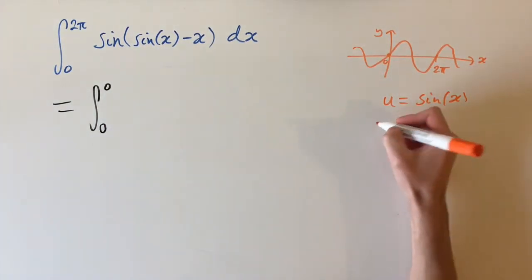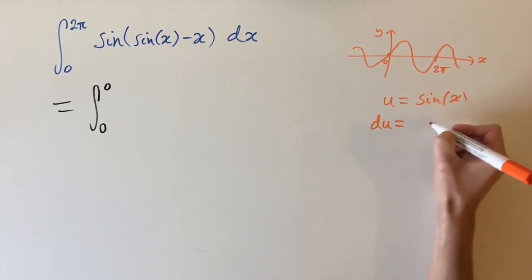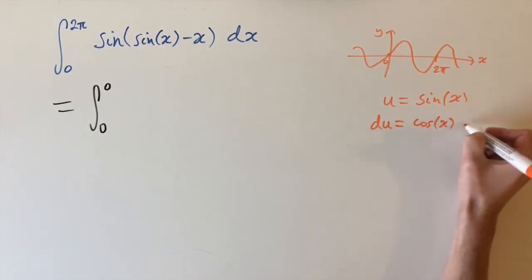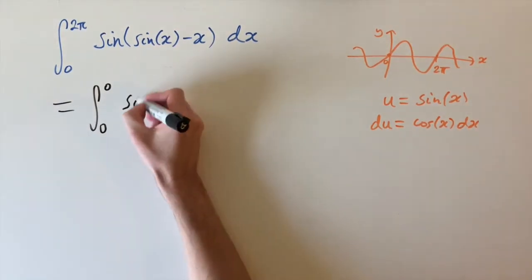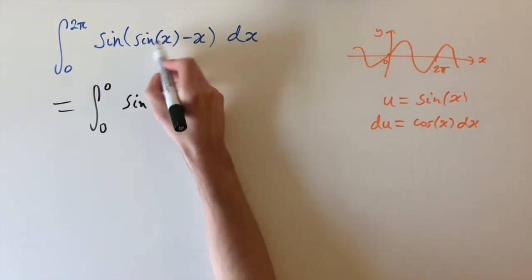So let's try and use a substitution. To do that, we need to differentiate this. So we need du = cos(x) dx. And then we can try and put this in. This gives us sin(u)...